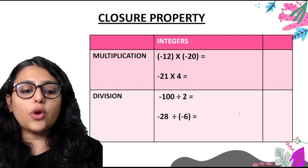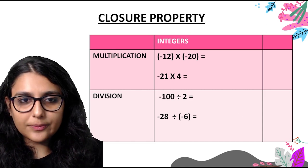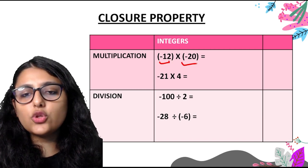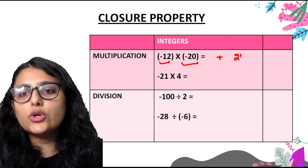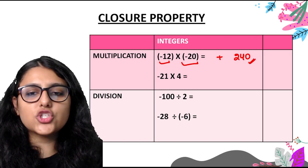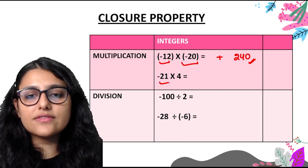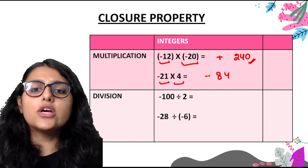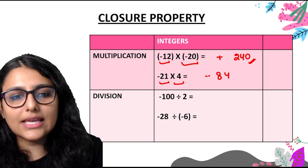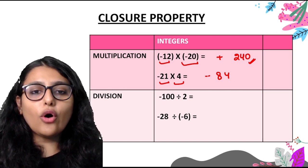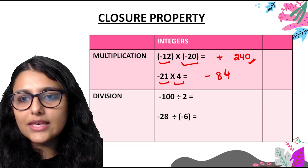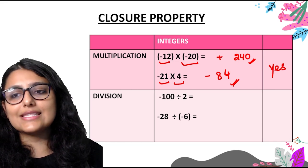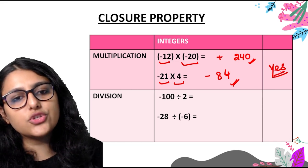Now for multiplication. We have minus 12 into minus 20. Two negative signs give a positive answer: 240, which is a positive integer. Then 21 into minus 4: one negative sign gives a negative answer of minus 84, also an integer. In both cases the answer is an integer, so yes, the closure property holds true for multiplication of integers.